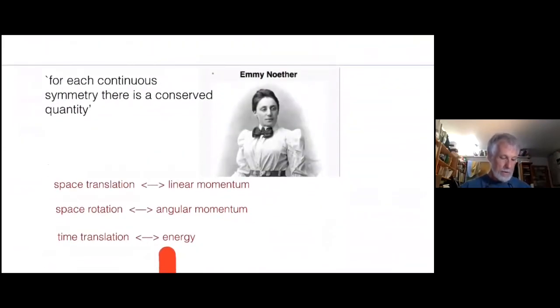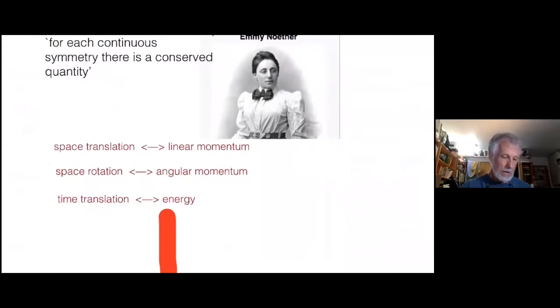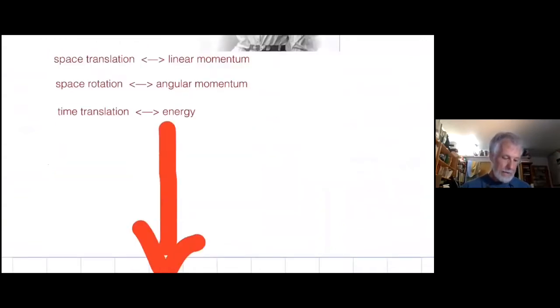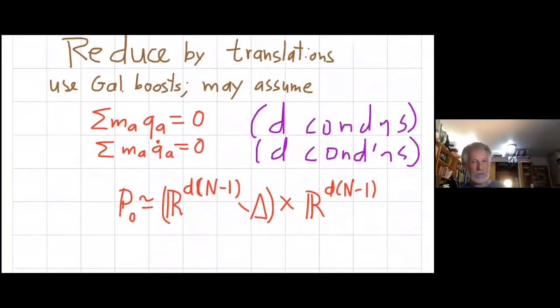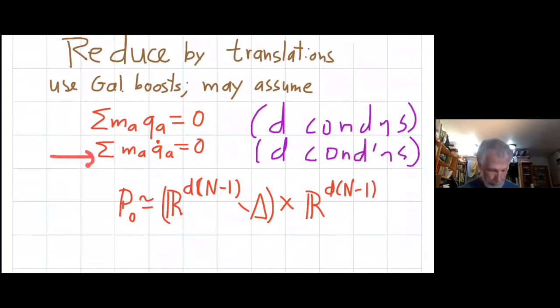Following Galileo, Newton made sure that his differential equations were such that if you had a solution, you apply a Galilean transformation to it, you get another solution. So Noether tells us that for every Galilean symmetry, there's going to be a conservation law. And if you use these, you can cut down the degrees of freedom to D times N minus one. You can turn the phase space into D times N minus one dimensional Euclidean space minus the collisions.